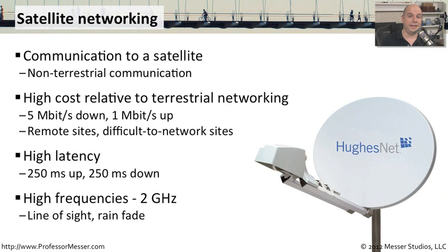Another challenge with satellite connectivity is you have to be able to see the satellite. Very often you're using very high frequencies to communicate between the ground station and the satellite, and if you have any type of interference in between, it can affect the throughput or even the availability of that network connection. This is commonly called rain fade — if you have a bad thunderstorm, it becomes impossible to send a signal up because the rain and clouds are affecting the ability to send that high-frequency signal through. The satellite can't see you, and you can't communicate.